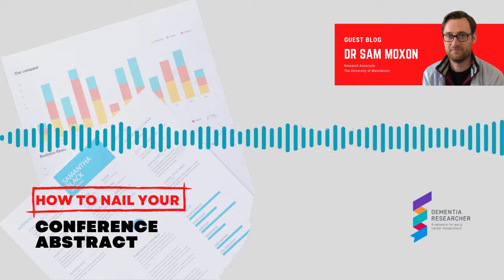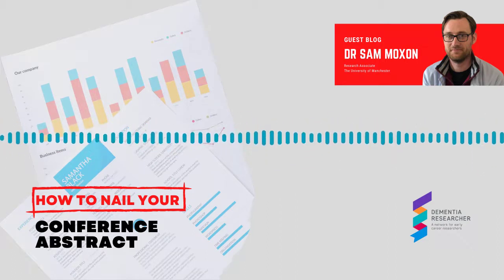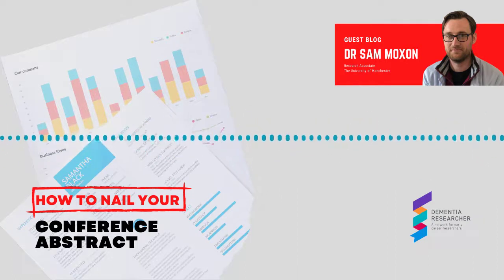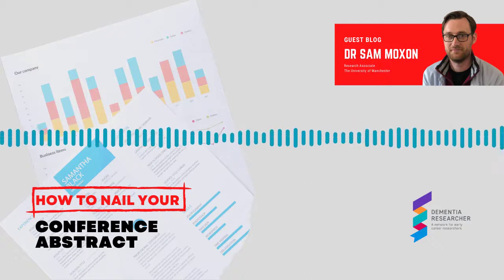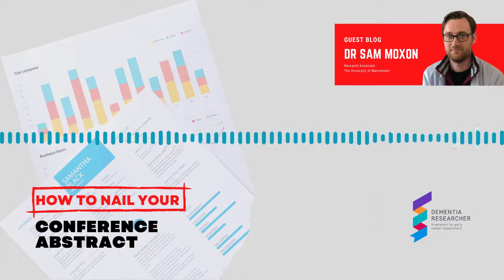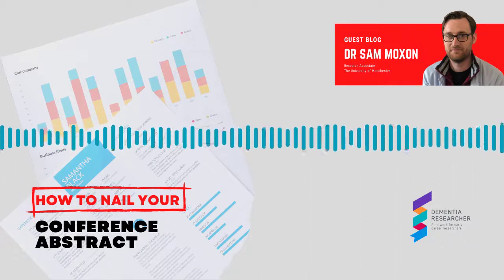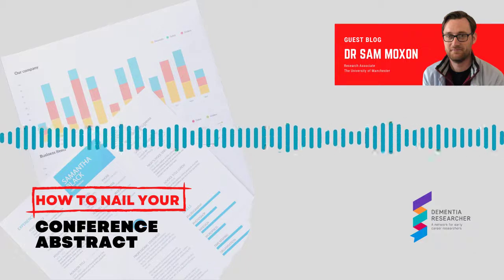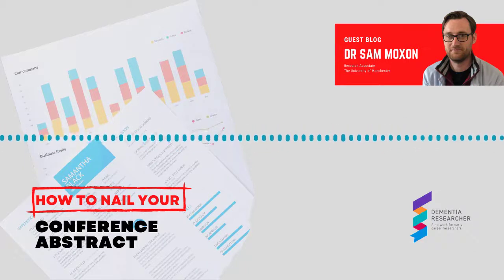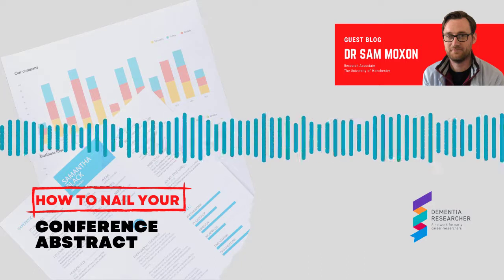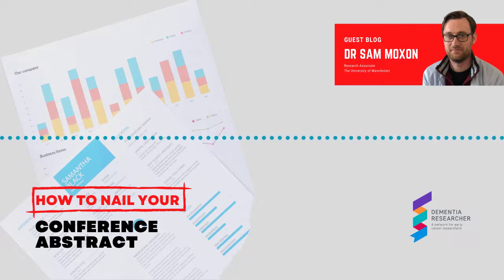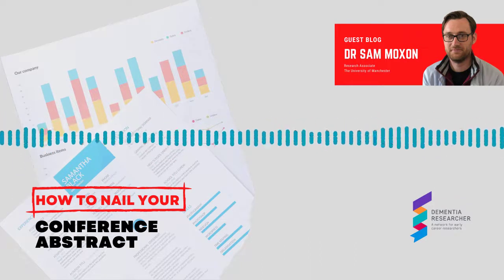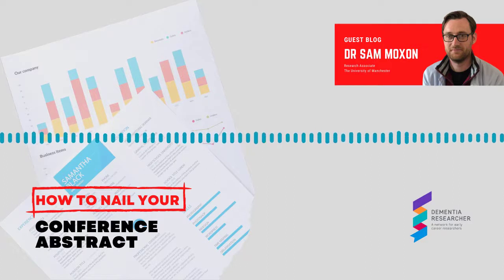Finally, you want to format your abstract in a way that saves space. Unless they state you have to, avoid double spacing. Keep your affiliations as short as possible and make your reference section small. Normally there's a minimum font size in an abstract template, but you can usually make your references smaller than this because they're not part of the abstract body — use small text in columns. If you do this you can get your references down to as little as a single line.